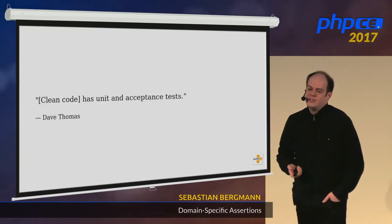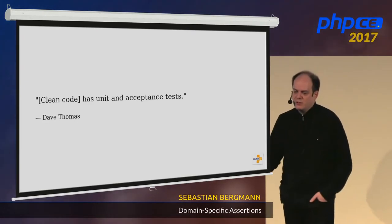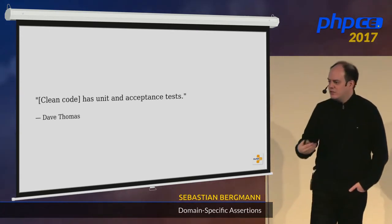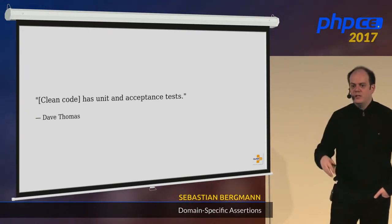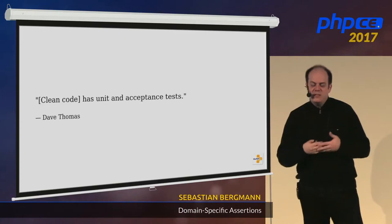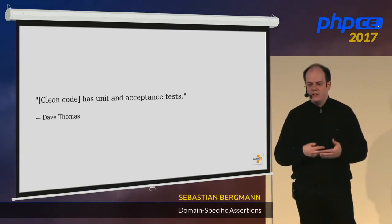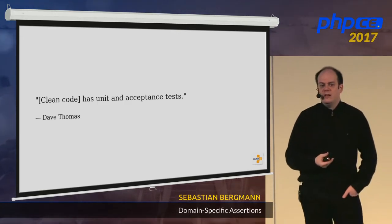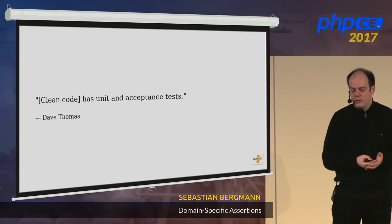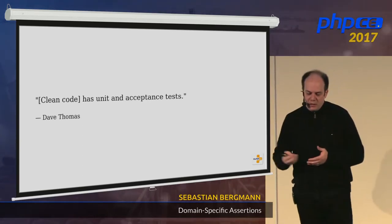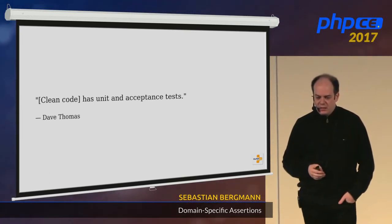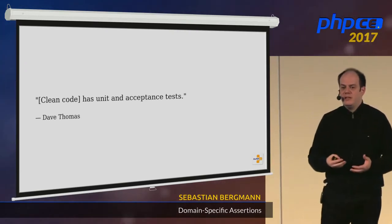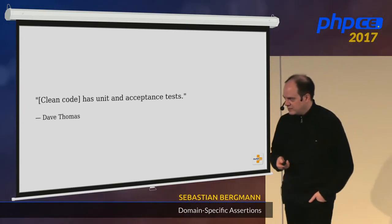Clean code has both unit and acceptance tests. Only having one does not really solve the problem. An application with lots of acceptance tests — using Behat or Selenium — only tells you it does what it's supposed to do today. It does not tell you how well the software is crafted or whether it can adapt to changing requirements. On the other hand, only having unit tests tells you the smallest pieces work correctly, but doesn't mean you've built the right thing.